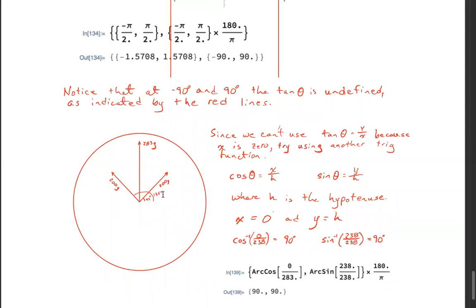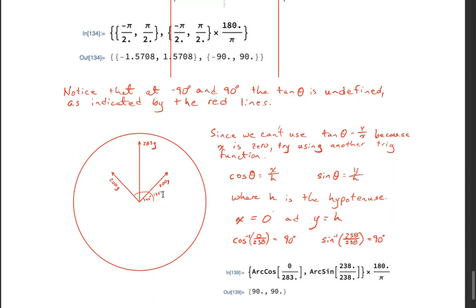You could use the cosine theta equals x over the hypotenuse, or you can use sine theta equals y over the hypotenuse, where H is the hypotenuse, x equals zero, and y equals H.